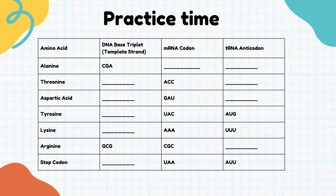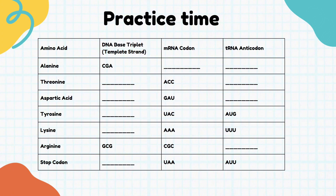Let's practice a typical exam question. Given the DNA base triplet CGA, the complementary mRNA codon will be GCU. I emphasize the U because we are on mRNA — if it were DNA it would have been thymine, but because it's mRNA it will be uracil. The tRNA anticodon will then be CGA.